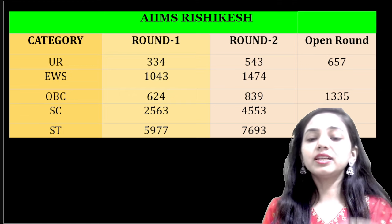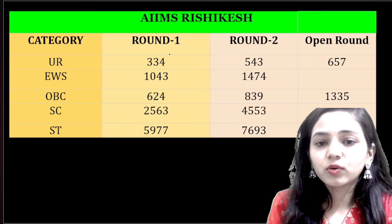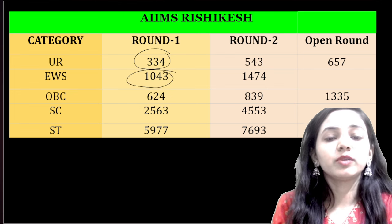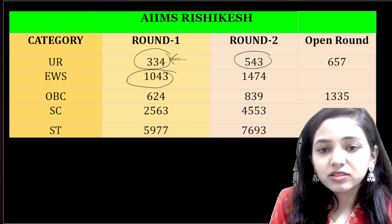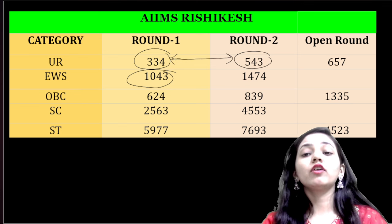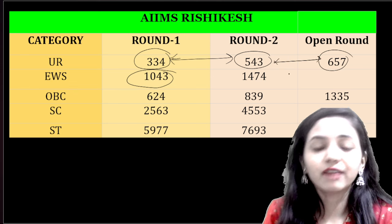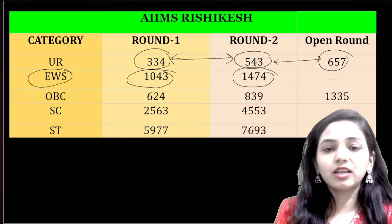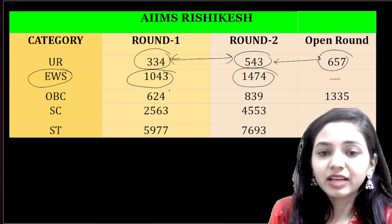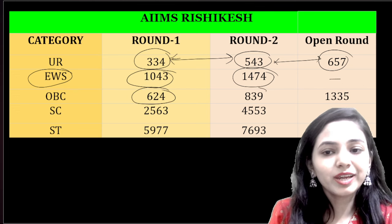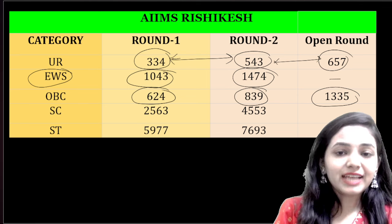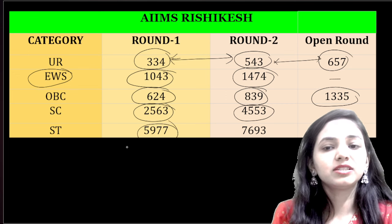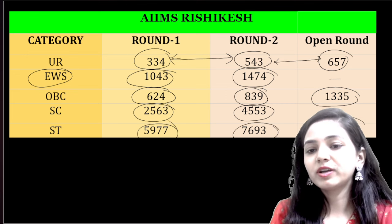In Round 1, for general category, the seat was allotted at rank 334. In EWS category at 1043. Comparing Round 1 and Round 2 for general category: 334 to 543, and in Open Round 657. In EWS, there was no seat allotment in Open Round. In OBC, Round 1 is 624, Round 2 is 839, and Open Round is 1335. In SC category, Round 1 is 2563, Round 2 is 4553. In ST category, Round 1 is 5977, Round 2 is 7693, and Open Round allotment was low.